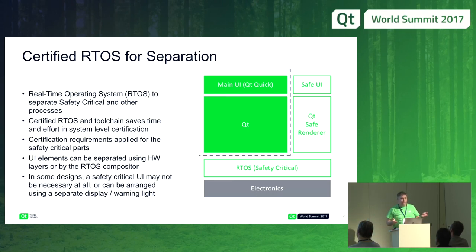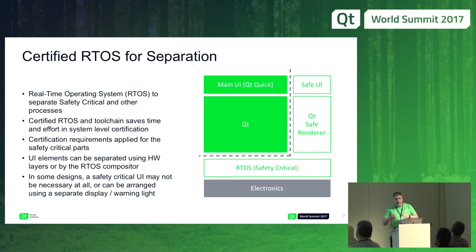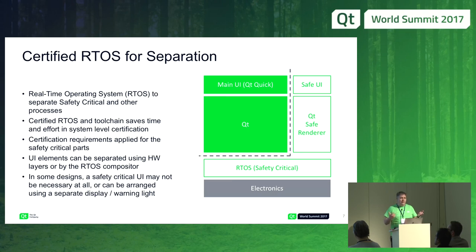The main UI of the system is created with Qt Quick. There can also be systems that have no safety-critical UI — for example, a system where you are controlling something and the critical part is that the control interface doesn't give a faulty command, but the actual UI doesn't contain any safety-critical elements. Quite often, though, there is a need to have some indicator, some text, or some signal for the user. This is where the Qt Safe Renderer comes to help.